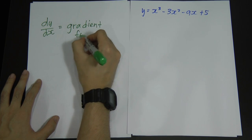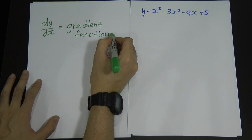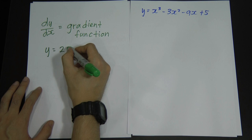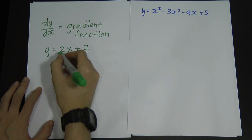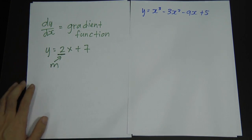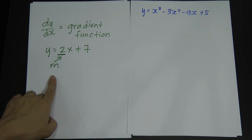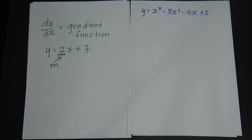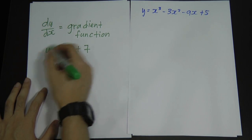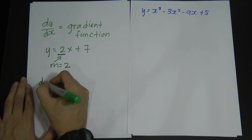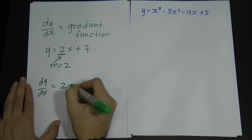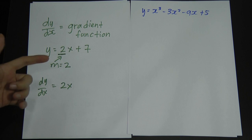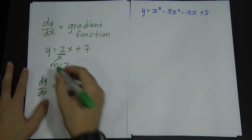A lot of students ask me: what is the difference between gradient and gradient function? For example, if we have y = 2x + 7, which is in the form y = mx + c, the 2 is your gradient. That 2 is a constant value, so we call it a gradient. Gradient function, on the other hand, means the value is not constant — you might get something like 2x instead of 2.